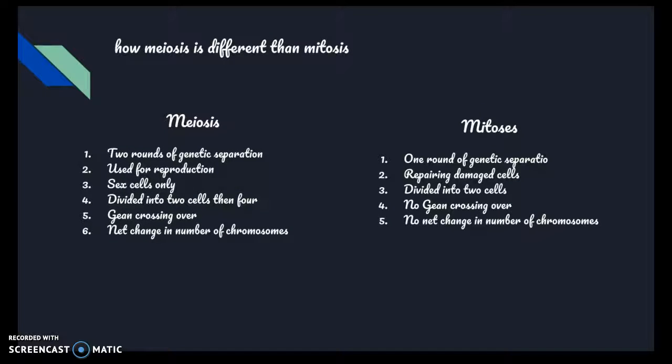How meiosis is different from mitosis. Meiosis has two rounds of genetic separation, used for reproduction. Sex cells only divide into two cells then four. Gene crossing over and net change in number of chromosomes, which means the number of chromosomes change.